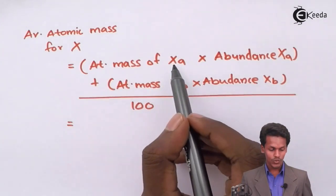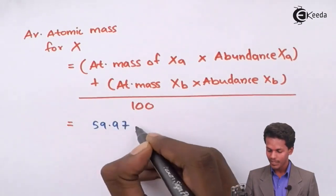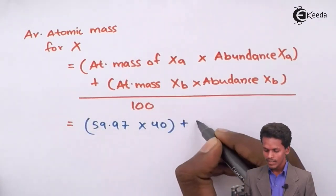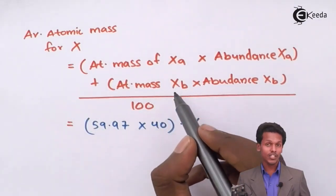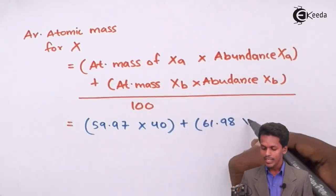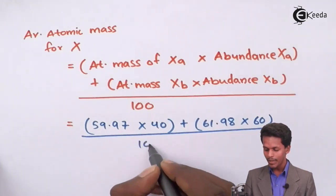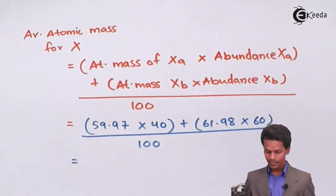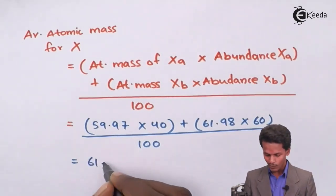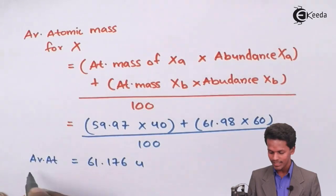The atomic mass of XA is 59.97 u with abundance 40%, and the atomic mass of XB is 61.98 u with abundance 60%. This whole thing divided by 100 gives us the answer: 61.176 unified mass. This is the average atomic mass we have got.